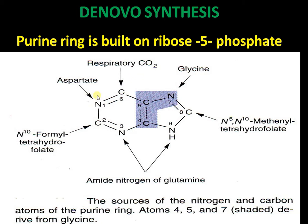Carbon dioxide contributes to C6 of the purine ring. So the sources of nitrogen and carbon atoms in the purine ring: atoms 4, 5, and 7 are contributed by glycine in the de novo pathway.